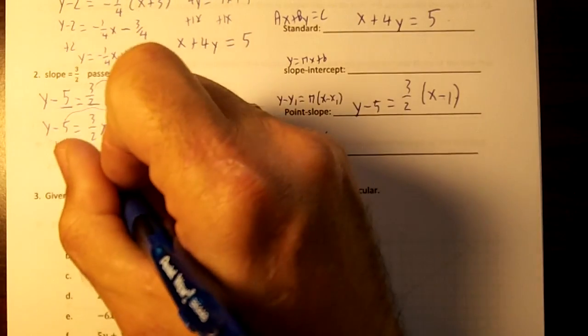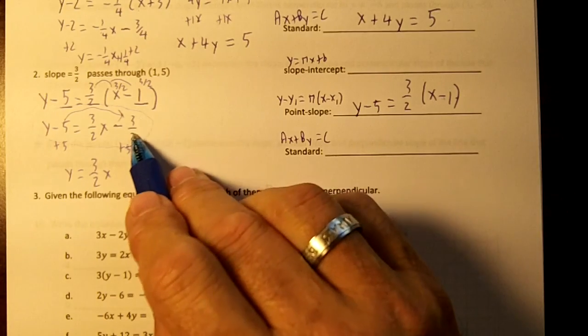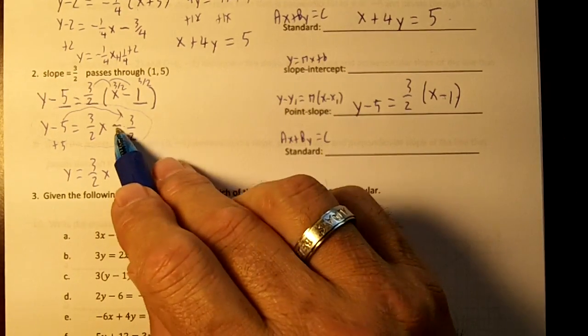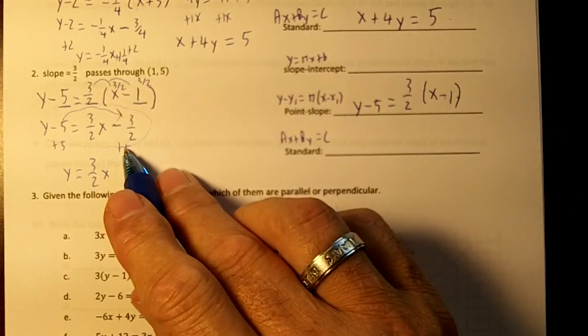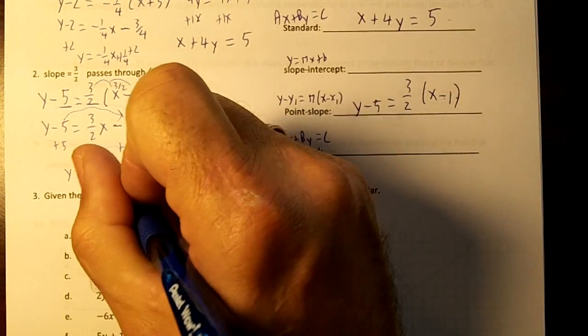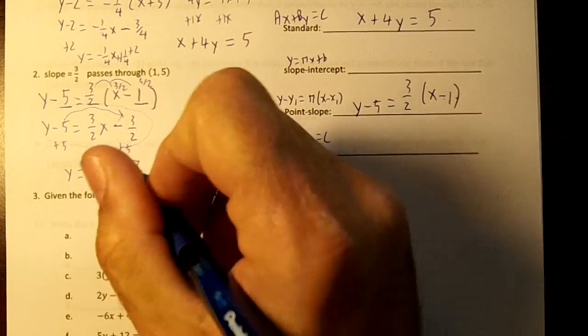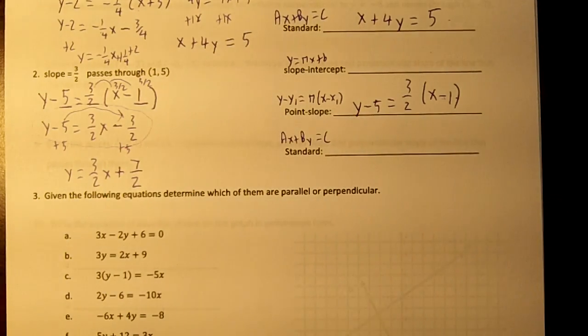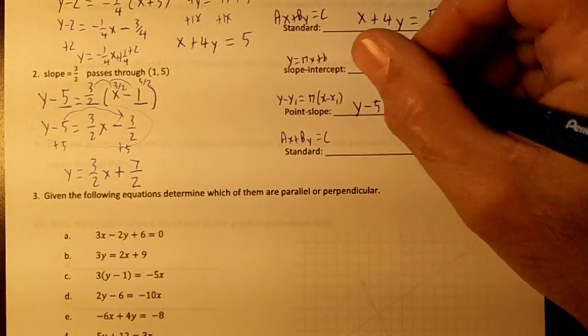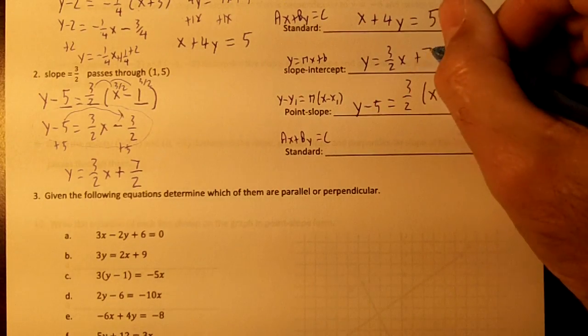You'll get y equals 3 over 2x. This is negative 1.5. Half of 3 is 1.5. 5 minus 1.5 would be 3.5, which would be 7 over 2. Okay, so this is our slope-intercept form. y equals 3 over 2x plus 7 over 2.